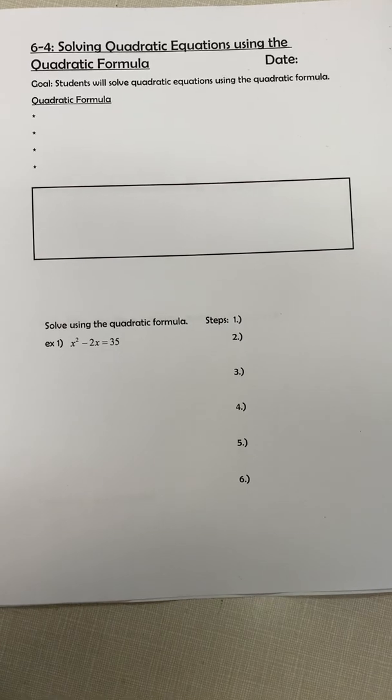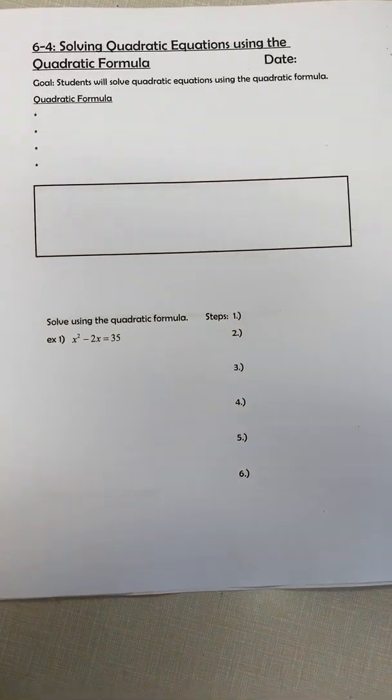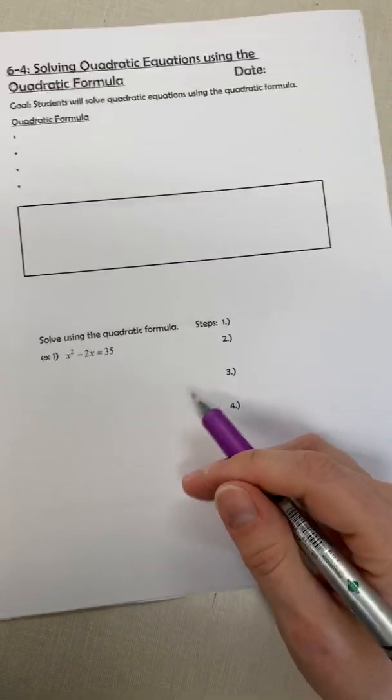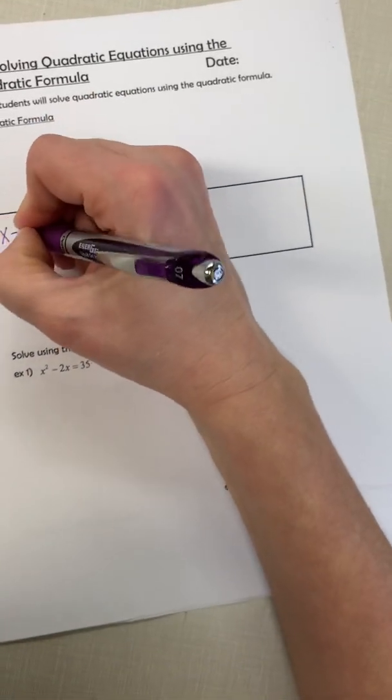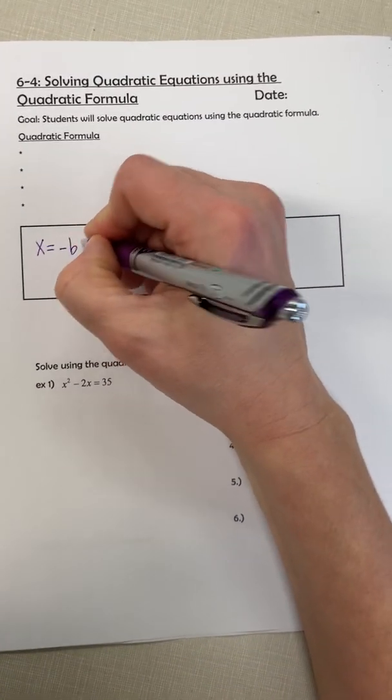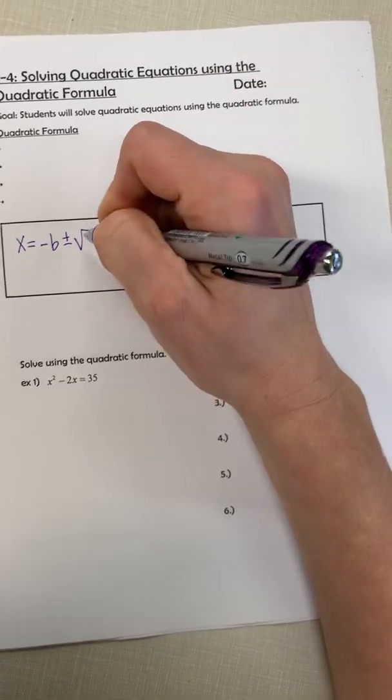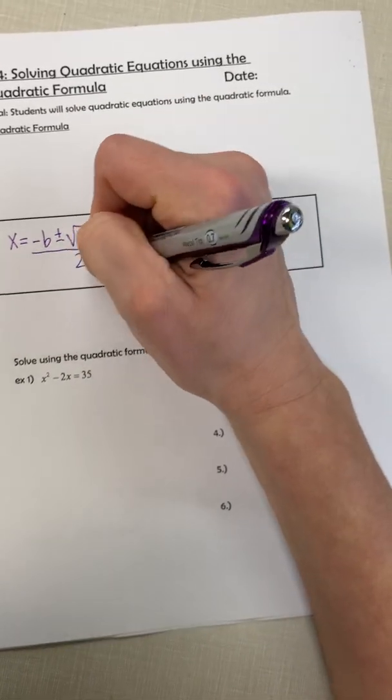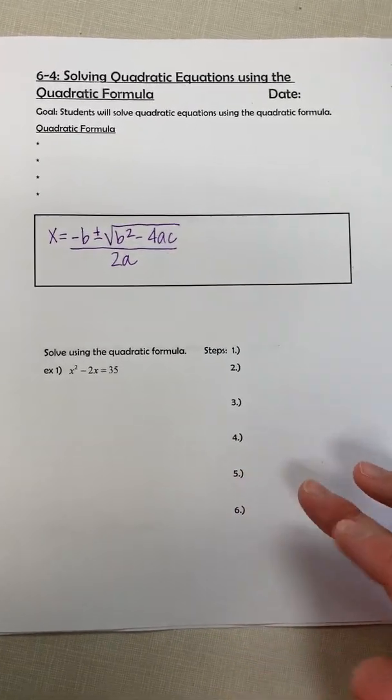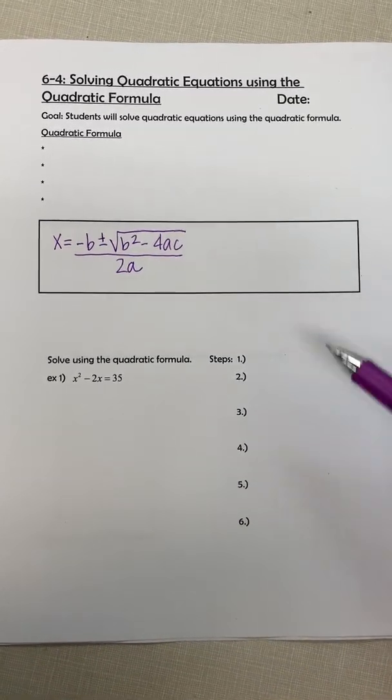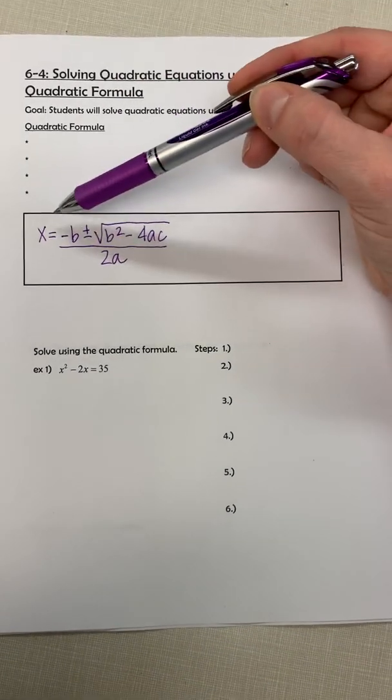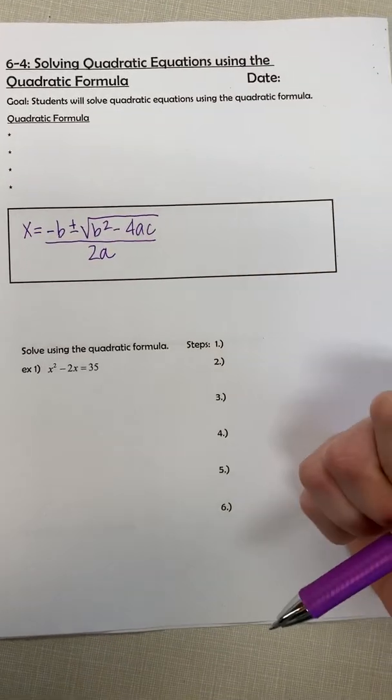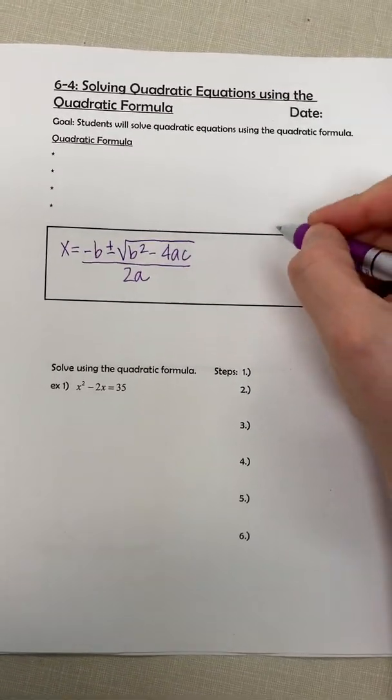So we're talking about the quadratic formula today, which you guys learned in Algebra 1 but it's been a while. It's the one I used to sing a song for. The quadratic formula is x equals the opposite of b plus or minus the square root of b squared minus 4ac all over 2a. The way I know it is to the tune of Pop Goes the Weasel. I apologize because that's about the quality of my singing voice.